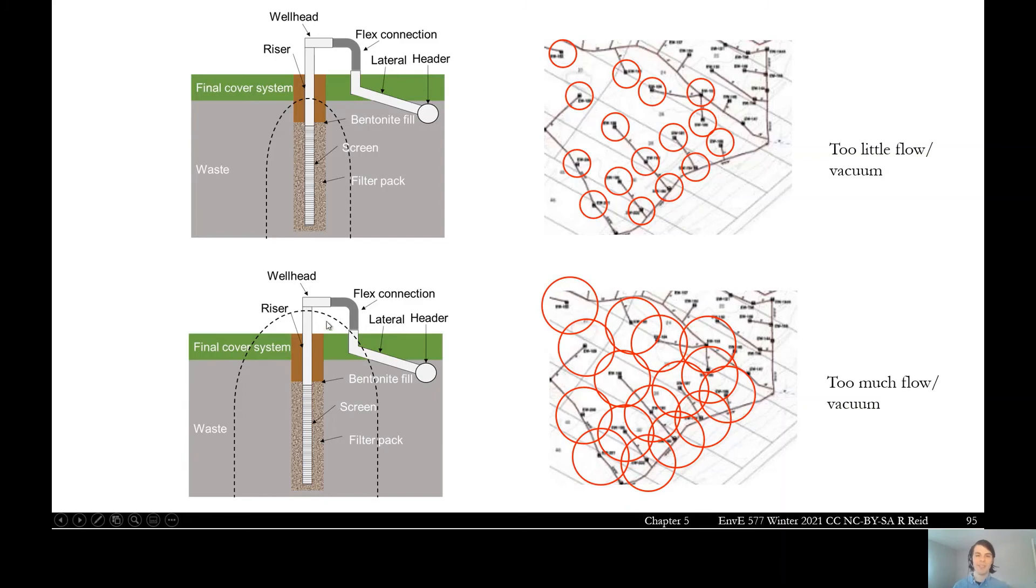The sweet spot would be kind of in between where the circles are just kissing each other. And then this sphere of influence is just kissing the surface, but not pulling in any atmosphere or a very small amount of atmosphere. And that means we're maximizing our collection while preventing the risk of getting atmosphere into our system.